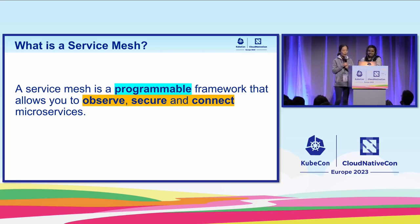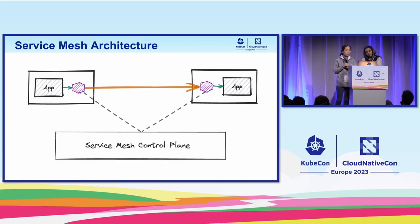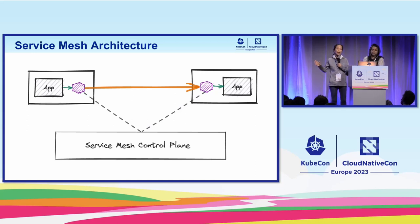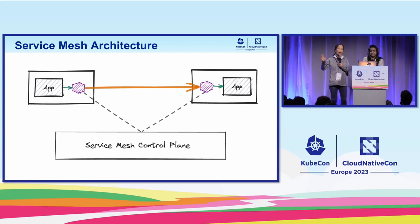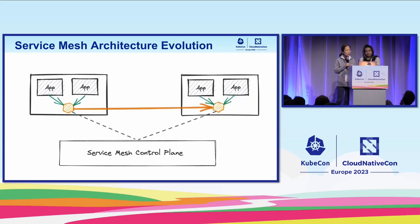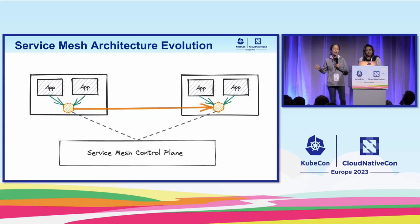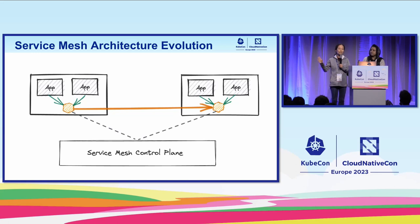Essentially it's a programmable framework that allows you to connect, secure, and observe your microservices without you writing those code in your application. Service mesh architecture typically has a control plane that you interact with to set up your network policy, your security policy, and the control plane programmably programs all the sidecars to do the policy enforcement within the Istio project. And we've seen across the service mesh industry space some new innovation coming in without the sidecar. So how many of you would be interested to run service mesh without a sidecar?